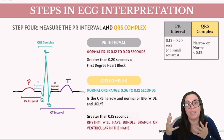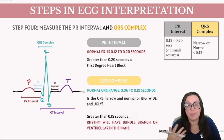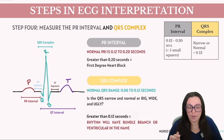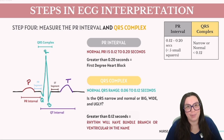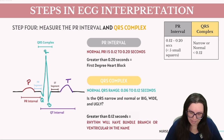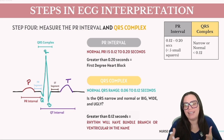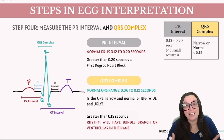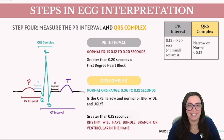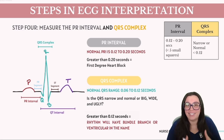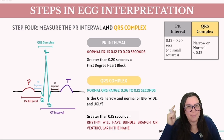Step four involves evaluating the QRS complex using a similar approach — counting the number of small boxes from the start of the QRS complex to the end of the S wave. The ideal QRS duration should be between 0.06 and 0.12 seconds. A useful question to ask: are the QRS complexes narrow and normal, or are they big, wide, and ugly? If a QRS complex is greater than 0.12 seconds, the rhythm will always have either 'bundle branch' or 'ventricular' in its name.